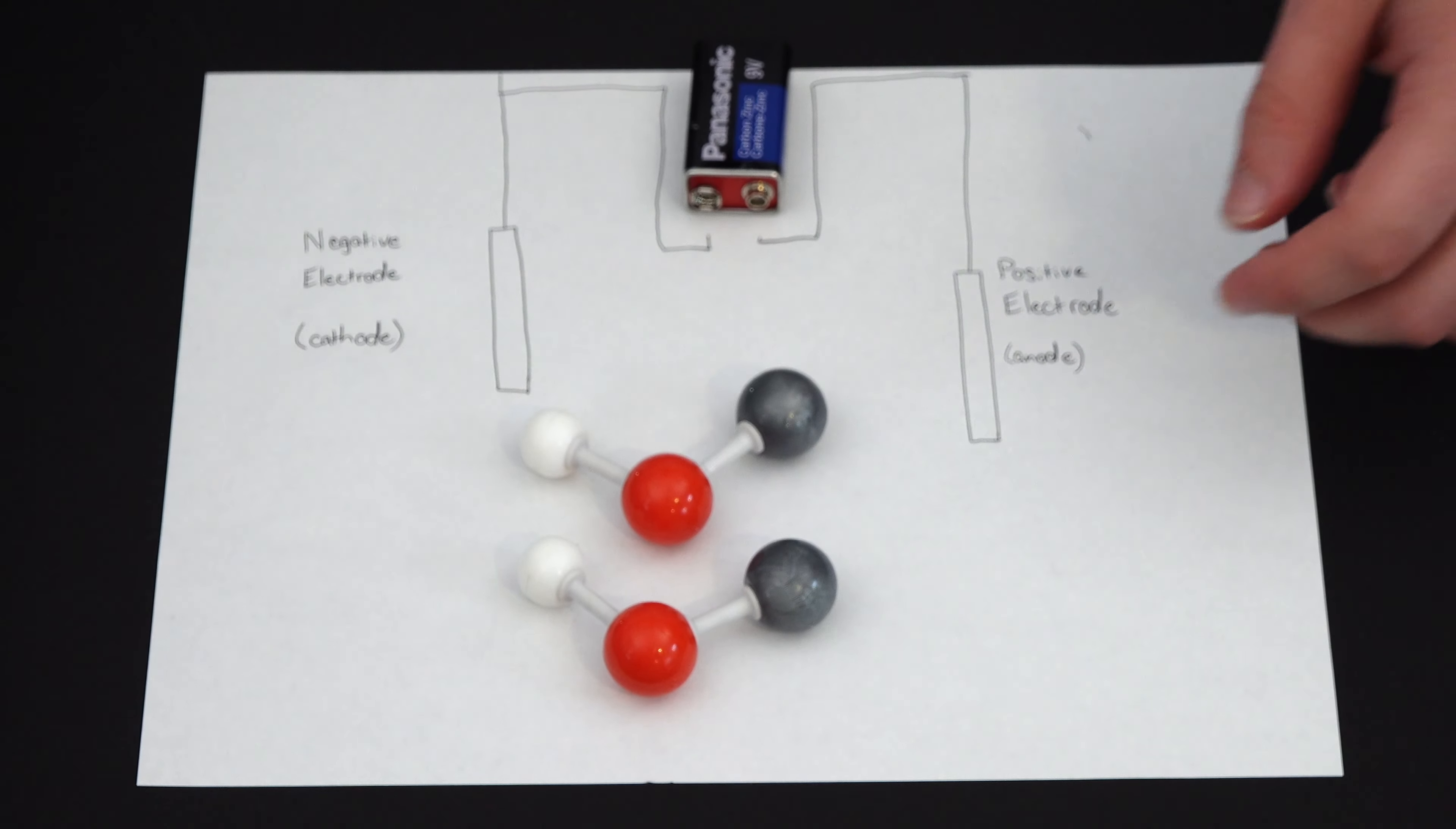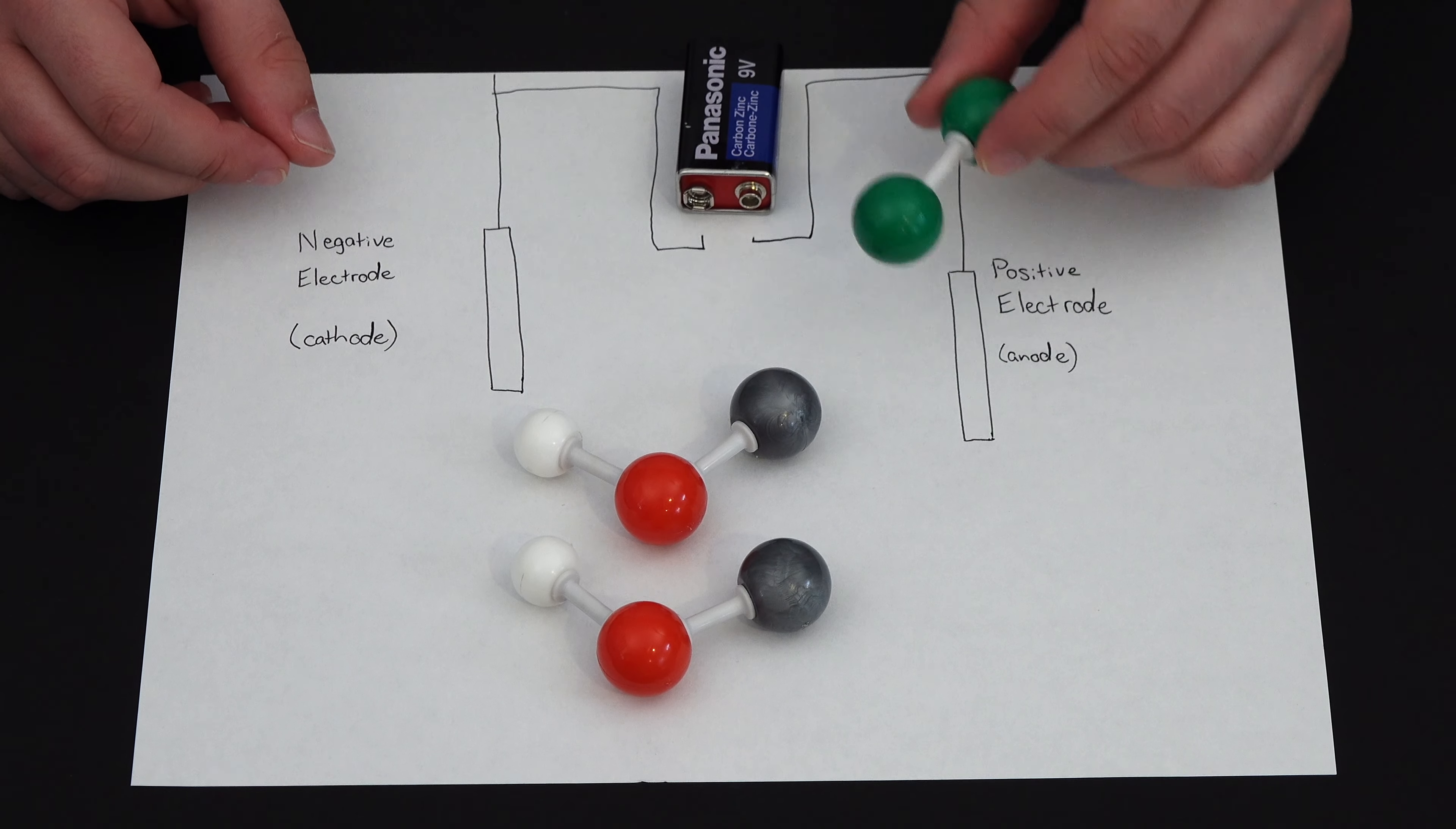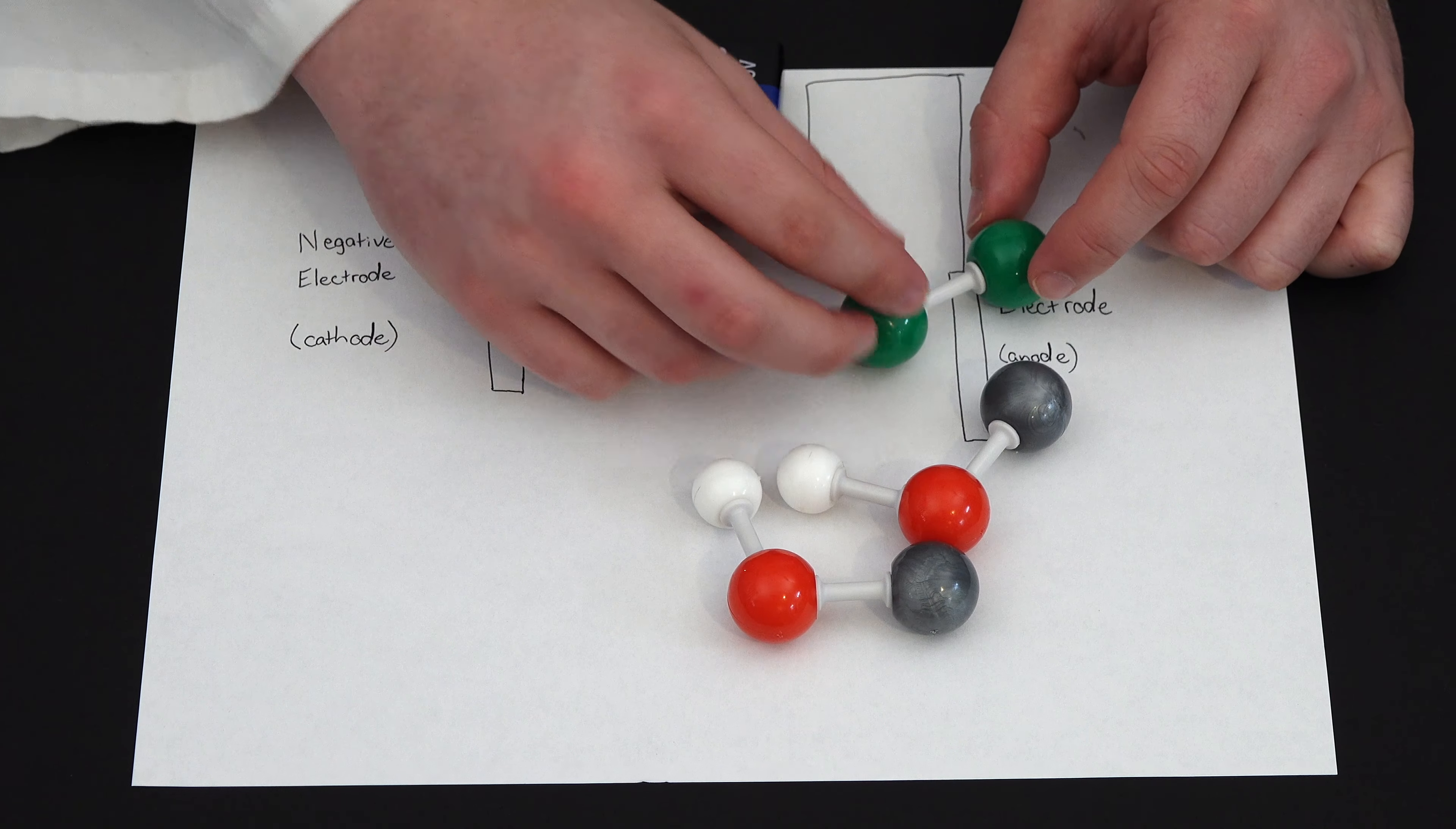Now, what can happen in this system is after you do this electrolysis for a good long while, you start building up a lot of this sodium hydroxide, which makes our solution basic. In a basic solution, as we produce this chlorine gas over here, you're going to start getting your sodium hydroxide kind of around this terminal as well.